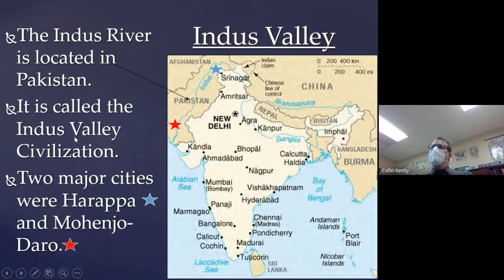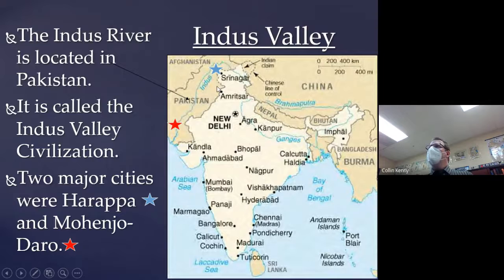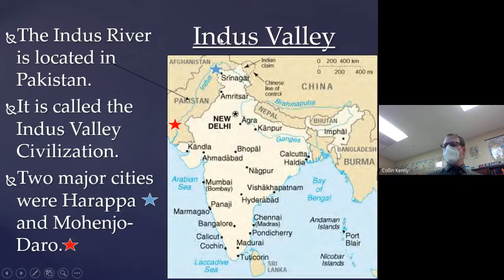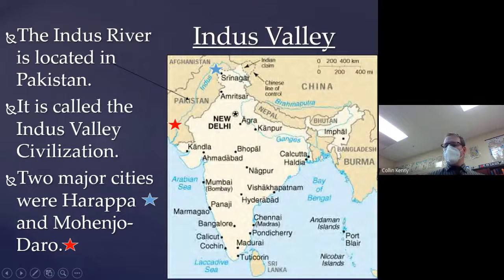The two places we're going to be focusing on are Harappa, which is the blue star, and Mohenjo-daro, which is the red star. They're going to be two pretty awesome spots, and we're going to learn a lot about Harappa and Mohenjo-daro these next couple of days. And that is actually going to be our notes for the day — super short.